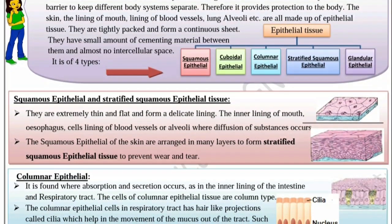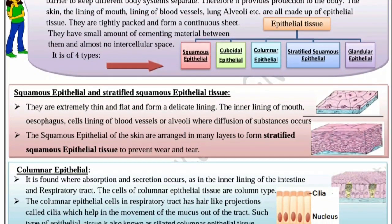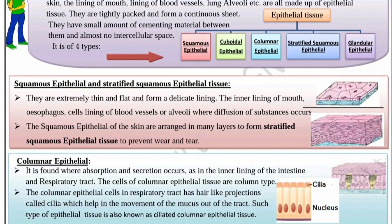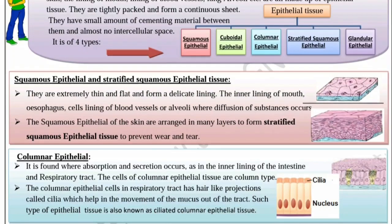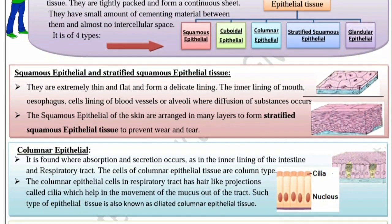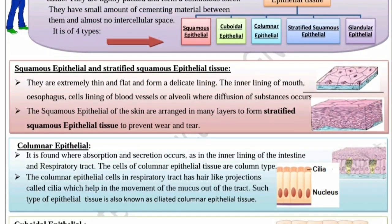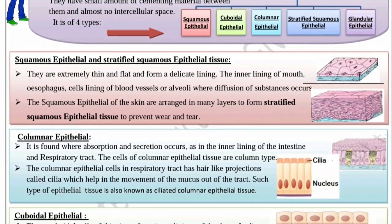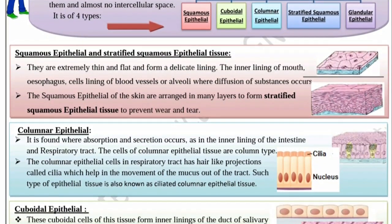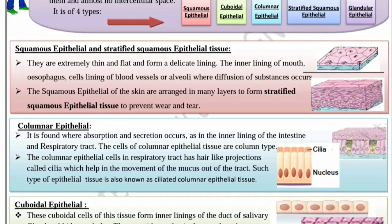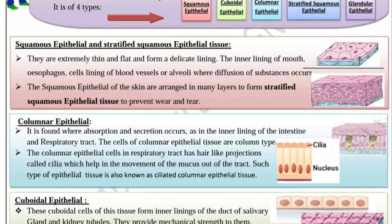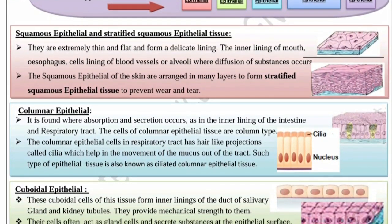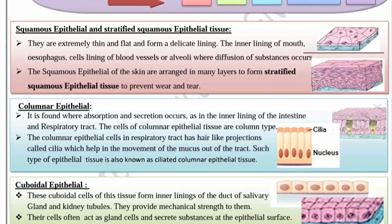Squamous epithelial tissues are extremely thin and flat and form a delicate lining. The inner lining of the mouth, esophagus, cells lining of the blood vessels, or alveoli are examples where diffusion of substances occurs. The squamous epithelial of the skin are arranged in many layers to form stratified squamous epithelial tissue, to prevent wear and tear.